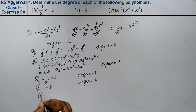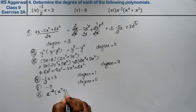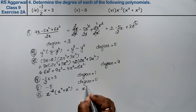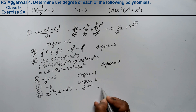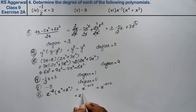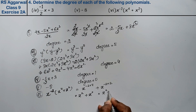Let's do the sixth part. Sixth part is x to the power minus 2 into (x to the power 4 plus x to the power 2). Applying the exponent rule: x to the power (minus 2 plus 4) gives x squared, plus x to the power (minus 2 plus 2) gives x to the power 0, which is 1. So we have x squared plus 1, and degree is 2.